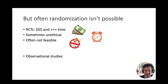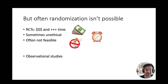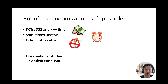But often randomization isn't possible. Randomized trials are very expensive to run, take tremendous time and energy, are sometimes unethical — you can't randomize somebody to smoke cigarettes versus not — and other times they're just not feasible. So for many studies, we're left with observational studies. There are analytic techniques to prevent and adjust for confounding, and there are also ways to account for this through study design. We'll include a link to a prior video on study design below, and the next few slides will cover the analytic techniques.